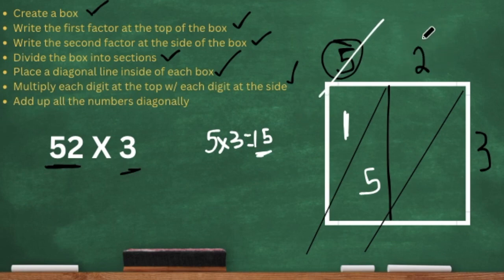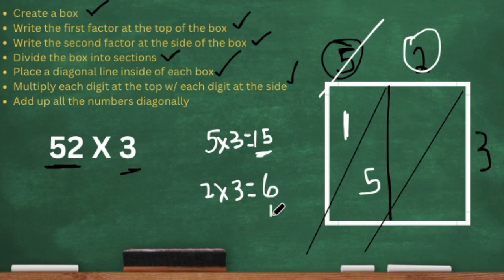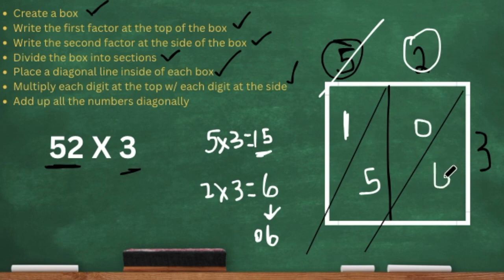So now we have two times three. Two times three is six. But six is a one-digit number. Remember, we need two digits. So we have six — we're just going to add a zero in front of that because we need two digits in order to fill those two sections up. Whenever you have a single-digit number, always add the zero in front of it.